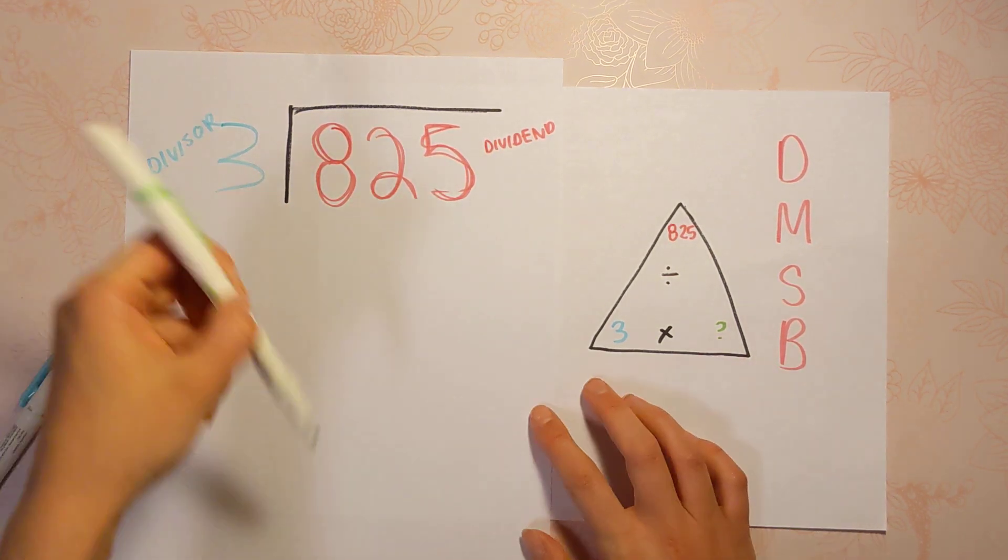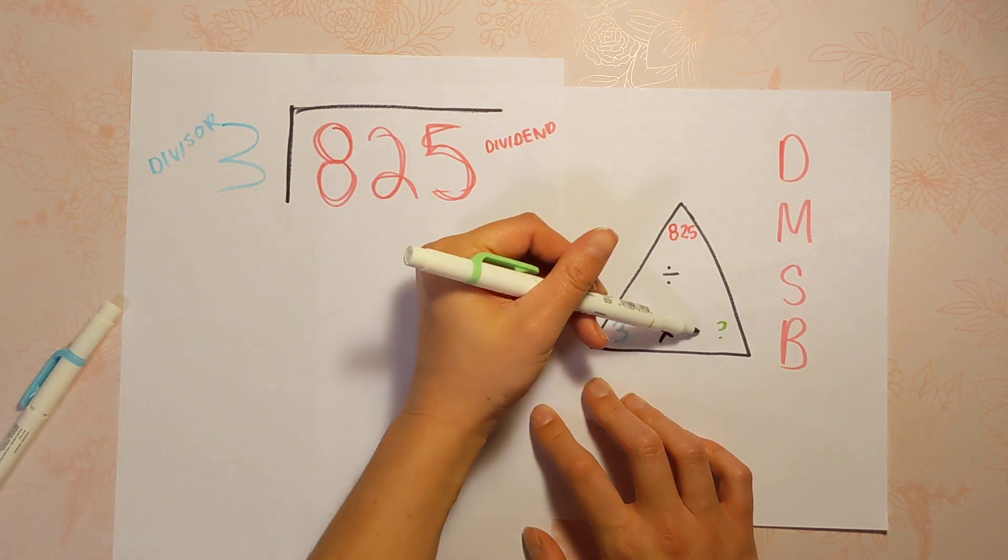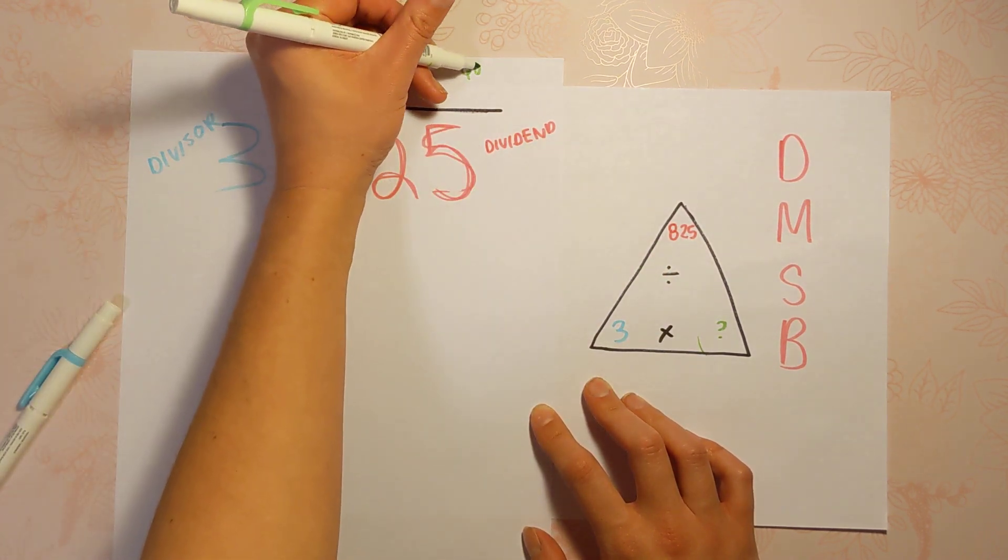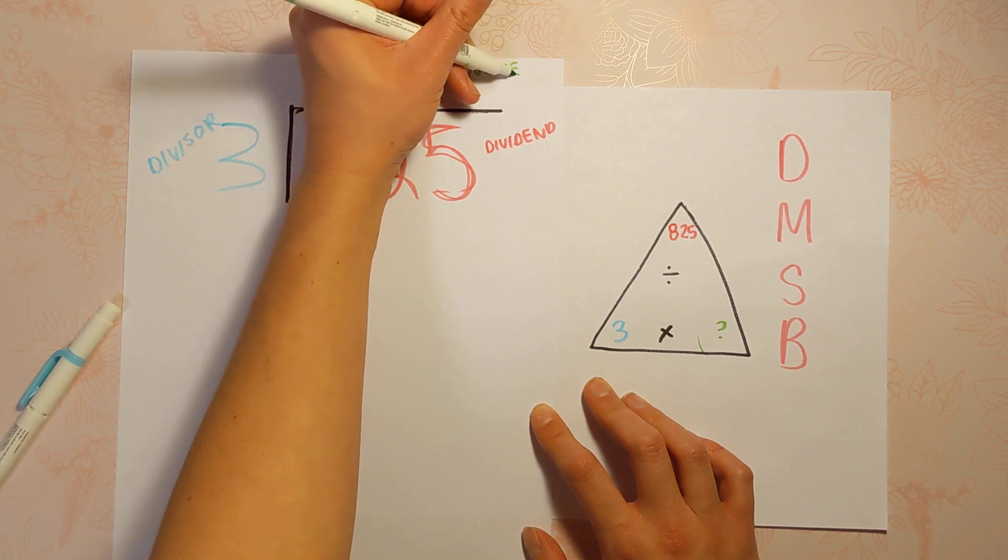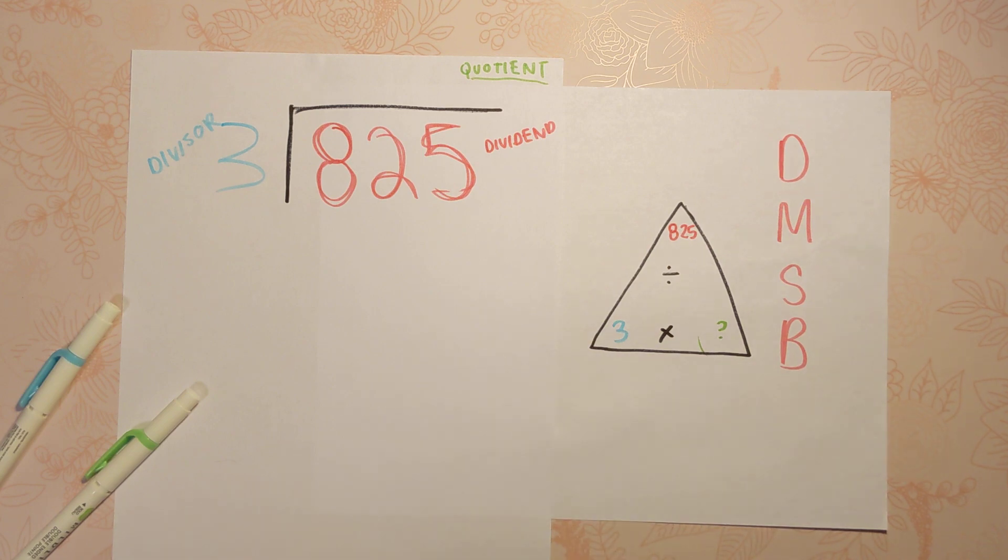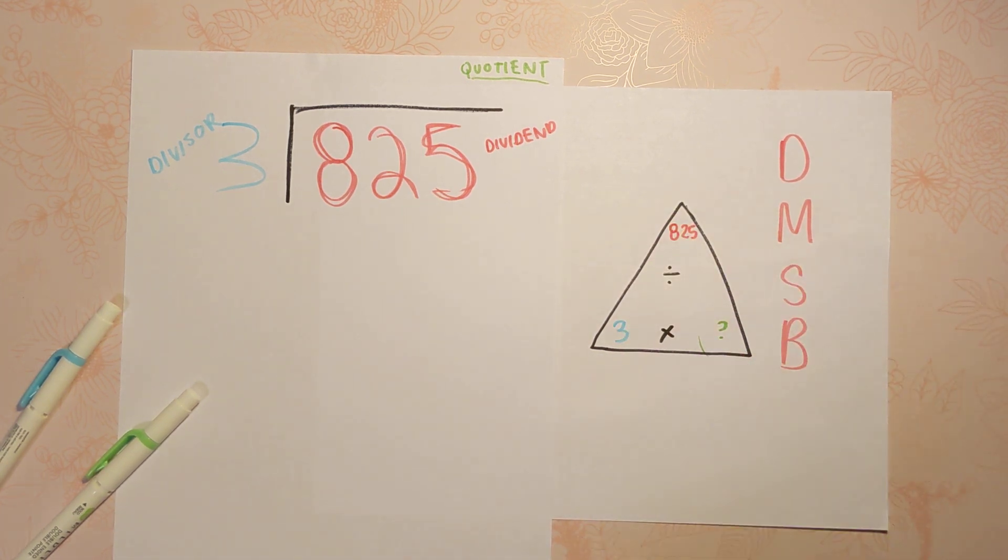And then the answer is going to go up here on the top and here on the triangle. And the answer is called the quotient. That is a fancy word for answer when you're dividing, just like the product is the answer in multiplication. In division, it's the quotient.